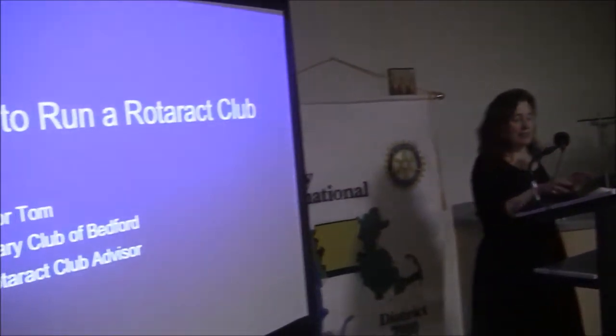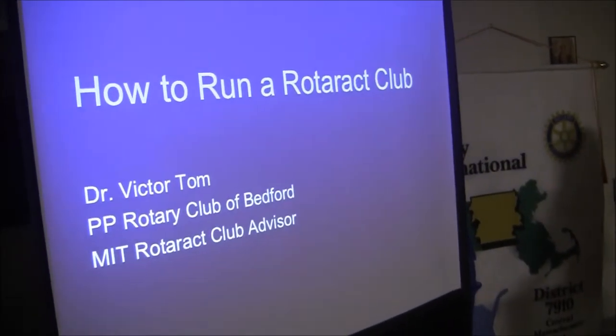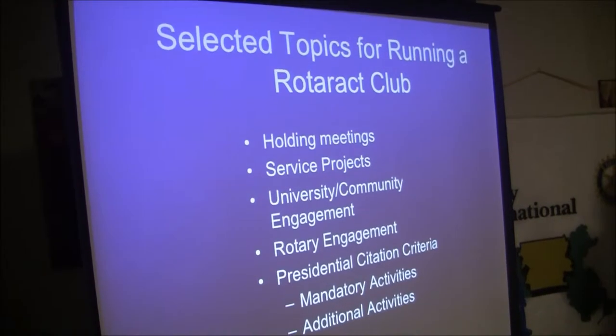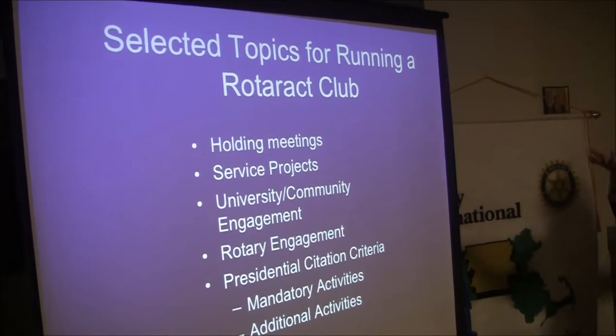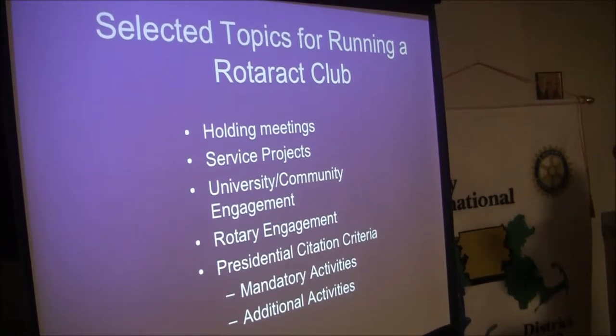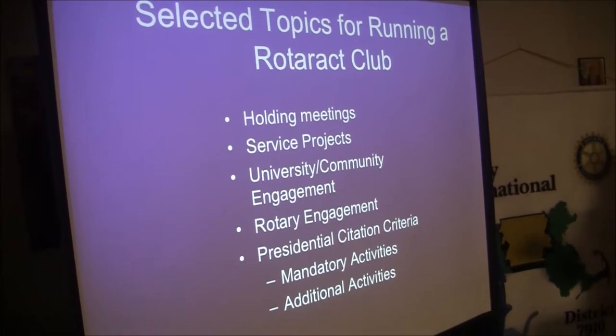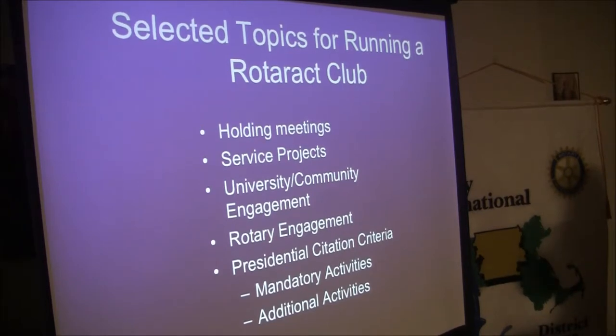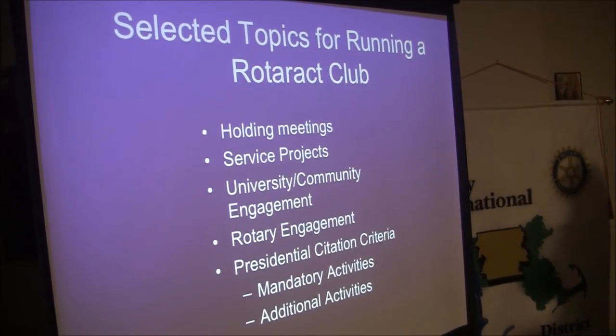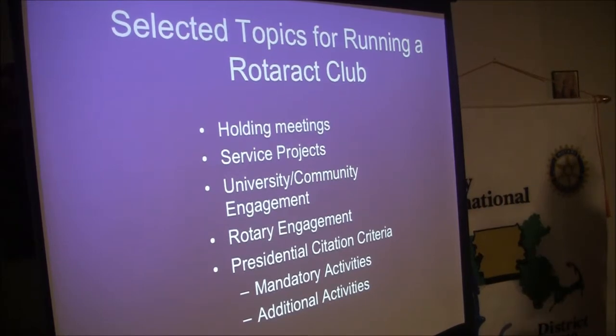Carl asked me to present Victor's presentation on how to run a Rotarac Club. I may have to ad-lib because the slides aren't advancing. Victor, I think, is in California — somewhere warm. He put together select topics for running a club: holding meetings, service projects, university and community engagement, Rotarac and Rotary engagement, and presidential citation criteria. I've already mentioned some of those in my earlier presentation.